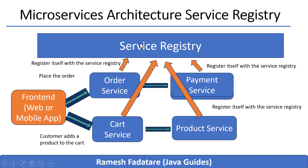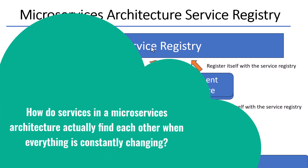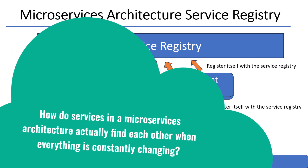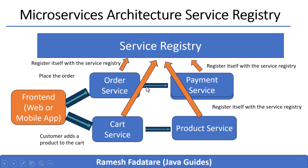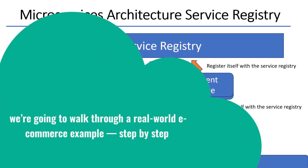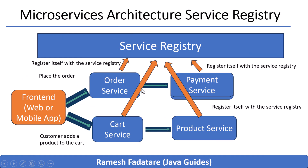Hey everyone, welcome back. In this video I'm going to explain something that quietly powers every microservices system you've ever used — from Amazon to Netflix. It's called the service discovery pattern. This pattern solves a very real problem: how do services in a microservices architecture actually find each other when everything is constantly changing? By the end, you will know exactly what service discovery is, why it matters, and how it works behind the scenes.